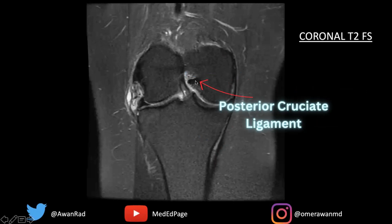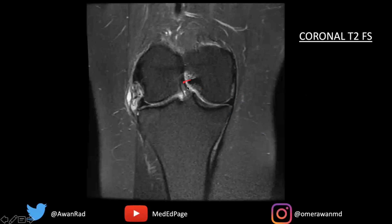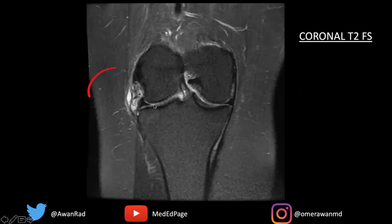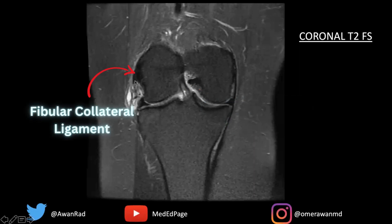We're seeing part of the posterior cruciate ligament extending from the medial intercondylar notch. Remember that the posterior cruciate ligament inserts onto the extraarticular tibia. Here we have the ACL, or anterior cruciate ligament, extending from the lateral intercondylar notch and inserting onto the tibial eminence. And finally, we have the fibular collateral ligament that runs from the lateral femoral condyle and inserts onto the fibular head.